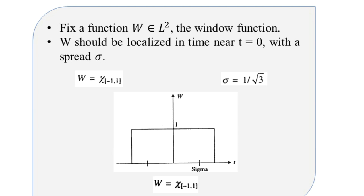We assume a certain function denoted by capital W, which belongs to the two-dimensional functional space L². We call W a window function, and it has localization in the time span centered at t equal to 0, as shown in the illustration. The spread, or standard deviation — a statistical parameter equal to the square root of the variance — is also visualized in this graphical illustration.